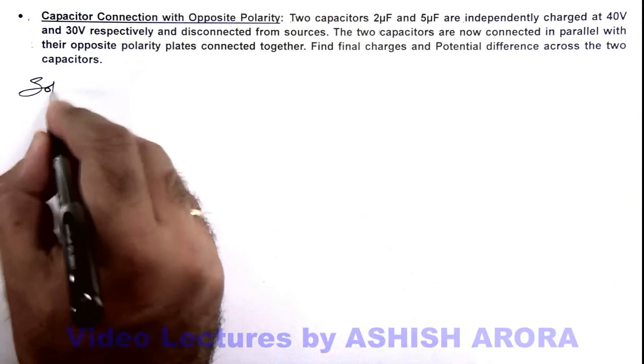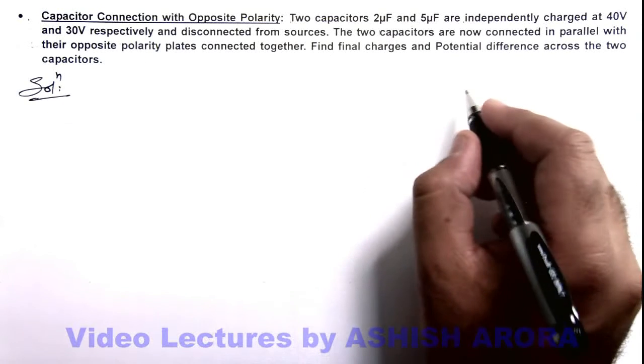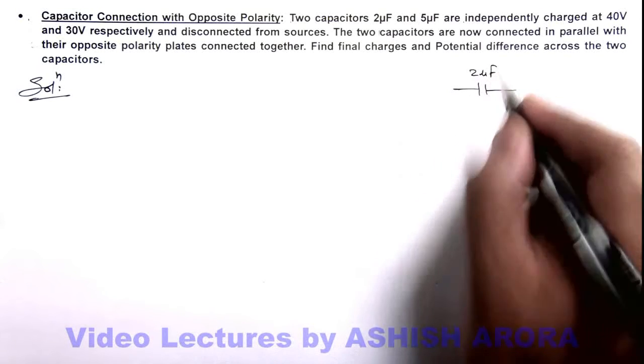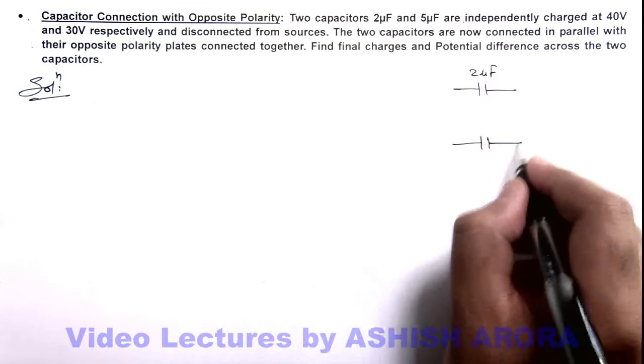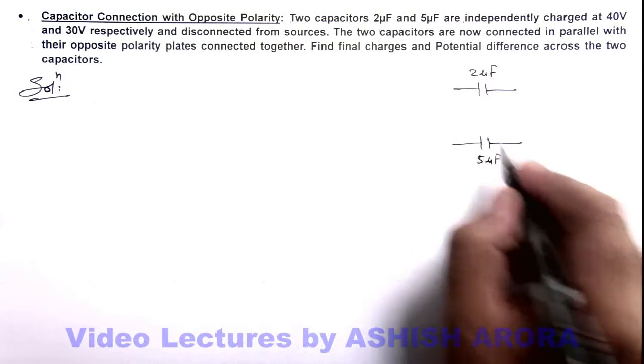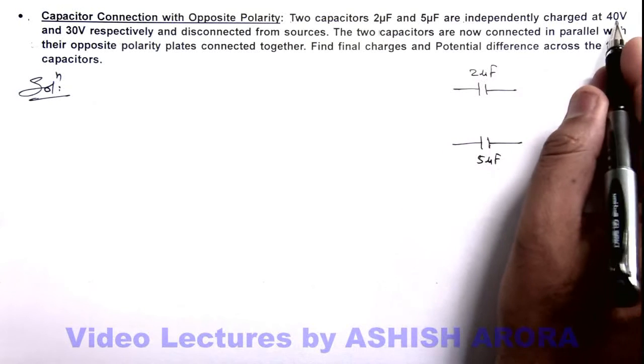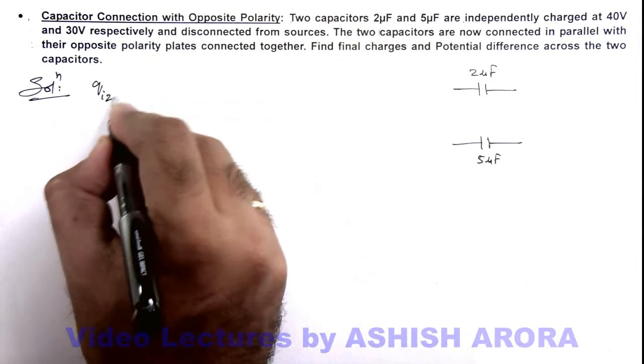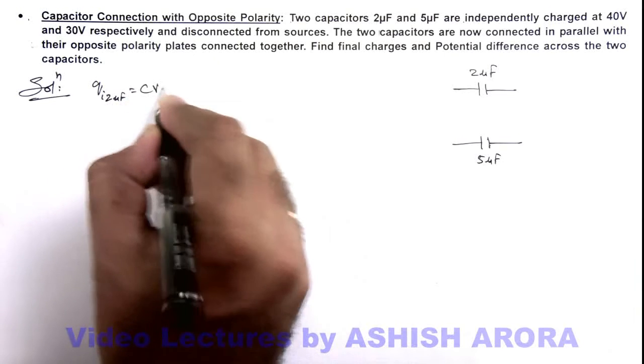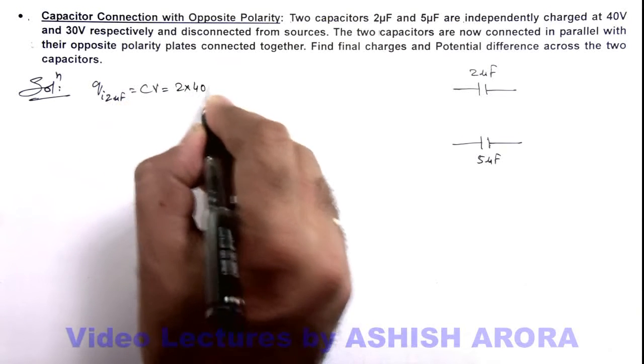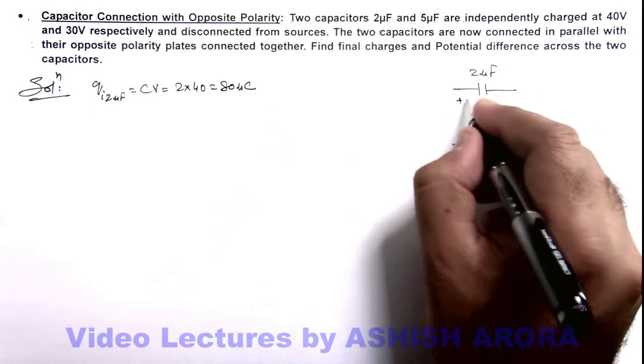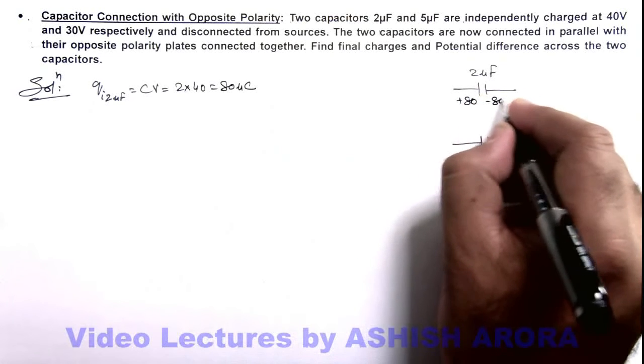Here in the solution, we can see there are two capacitors: one is 2 microfarad and the other is 5 microfarad. The 2 microfarad capacitor is charged at 40 volts. So the initial charge on 2 microfarad can be written as CV, which is 2 multiplied by 40, giving 80 microcoulombs. On its plates, the charges will be plus 80 and minus 80 microcoulombs.